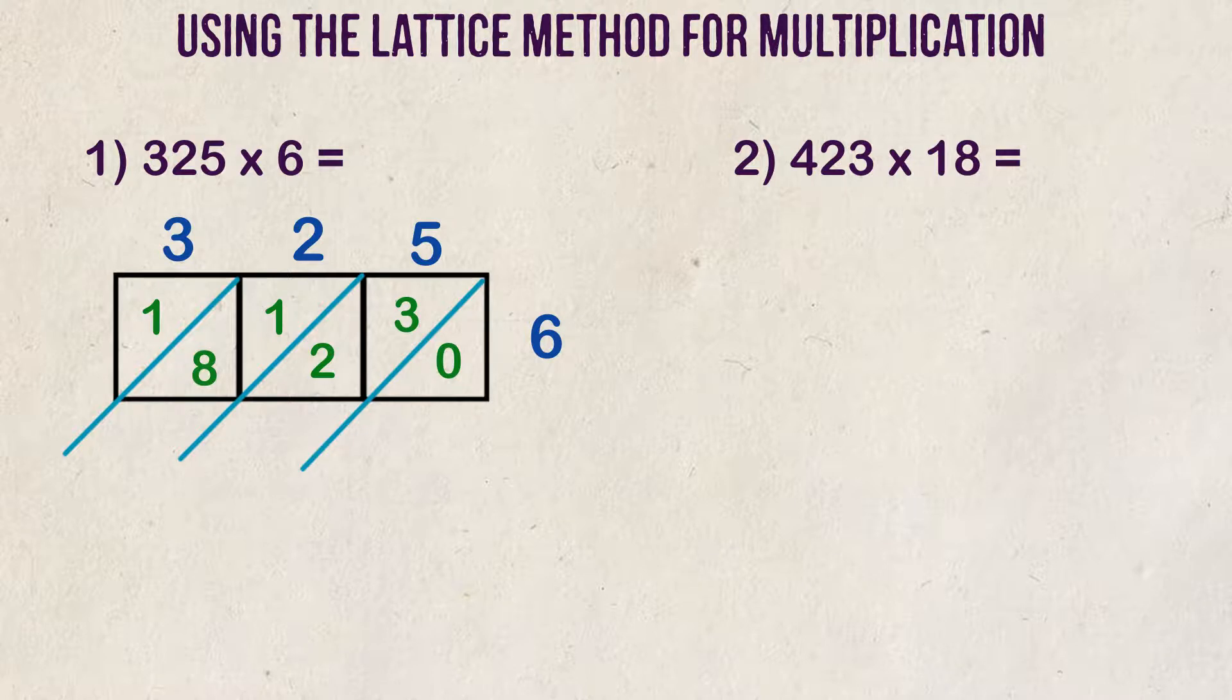Now, what we'll do is add our diagonal rows together. Our first diagonal is 0, and we place that number here. The next diagonal, we add 2 plus 3, and we get 5. Next column, 8 plus 1 is 9. And finally, 1 by itself is 1. 1,950 is our answer.